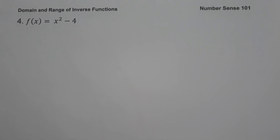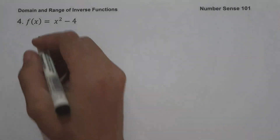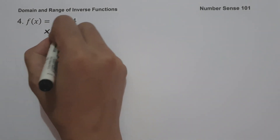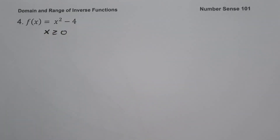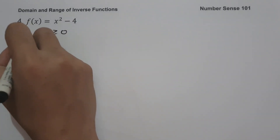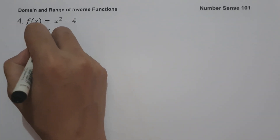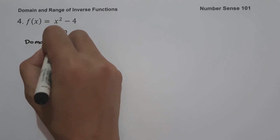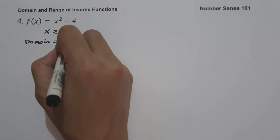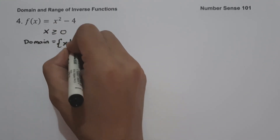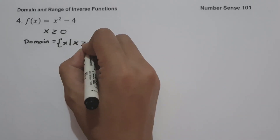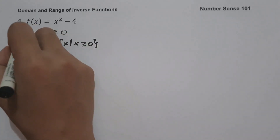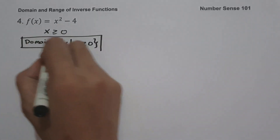But since our function is not one-to-one, we have to restrict our domain to x greater than or equal to 0. So the domain is the set of x values such that x is greater than or equal to 0. This will be our domain.